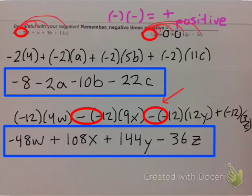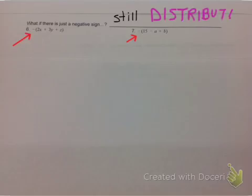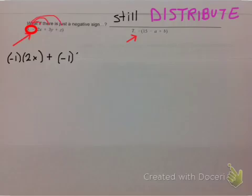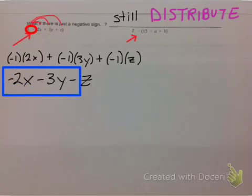Please be very careful with those negatives — make sure they turn into positives. Here is one that a lot of people tend to mess up on: what if there is just a negative out front? You still need to distribute. Negative is like saying negative 1. So it needs to be distributed to every single term: negative 1 times 2x, plus negative 1 times 3y, plus negative 1 times z. Simplifying: negative 2x, negative 3y, negative z. And that's your final answer.